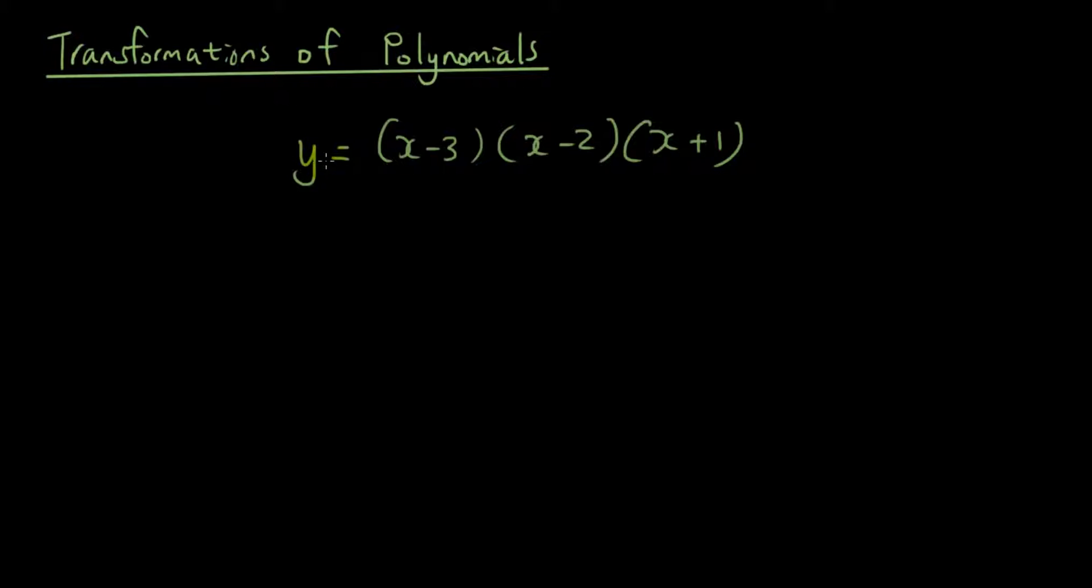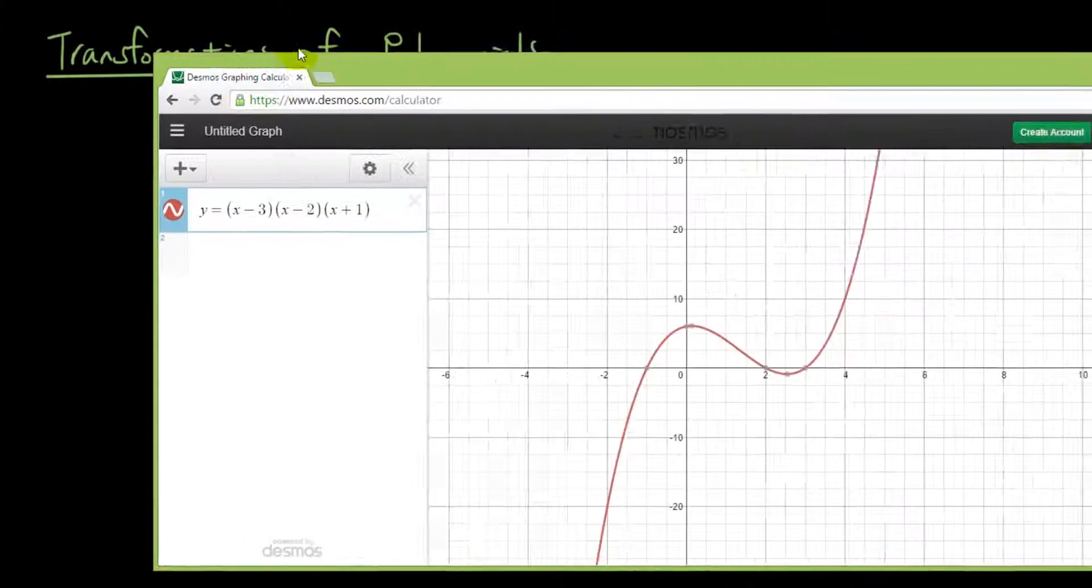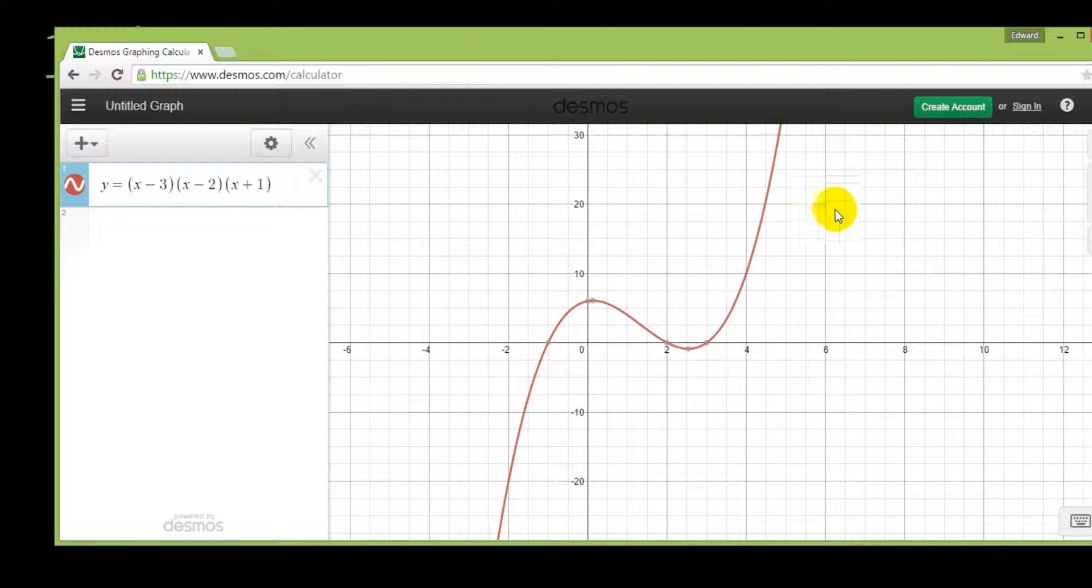So this is a polynomial and you can see that it's going to be a cubic because if you expand all the brackets, you will get a cubic equation. So if I draw this graph on Desmos, I end up with this equation. Okay, so this is the graph.